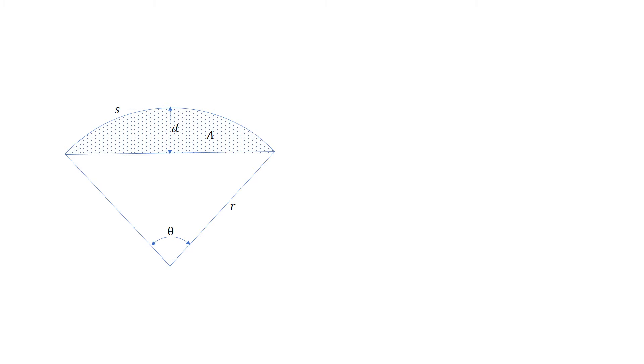For what we're asked, we're not going to need all these components. We're looking for the area, which is equal to R squared multiplied by theta minus the sine of theta, divided by 2. It is important to note that theta in these equations is in radians.